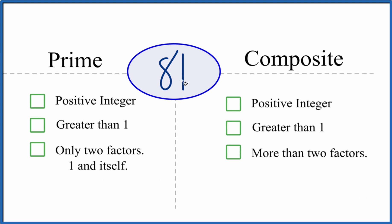So is it a positive integer? 81 is a whole number, it's positive. Is it greater than 1? 81, that's greater than 1.